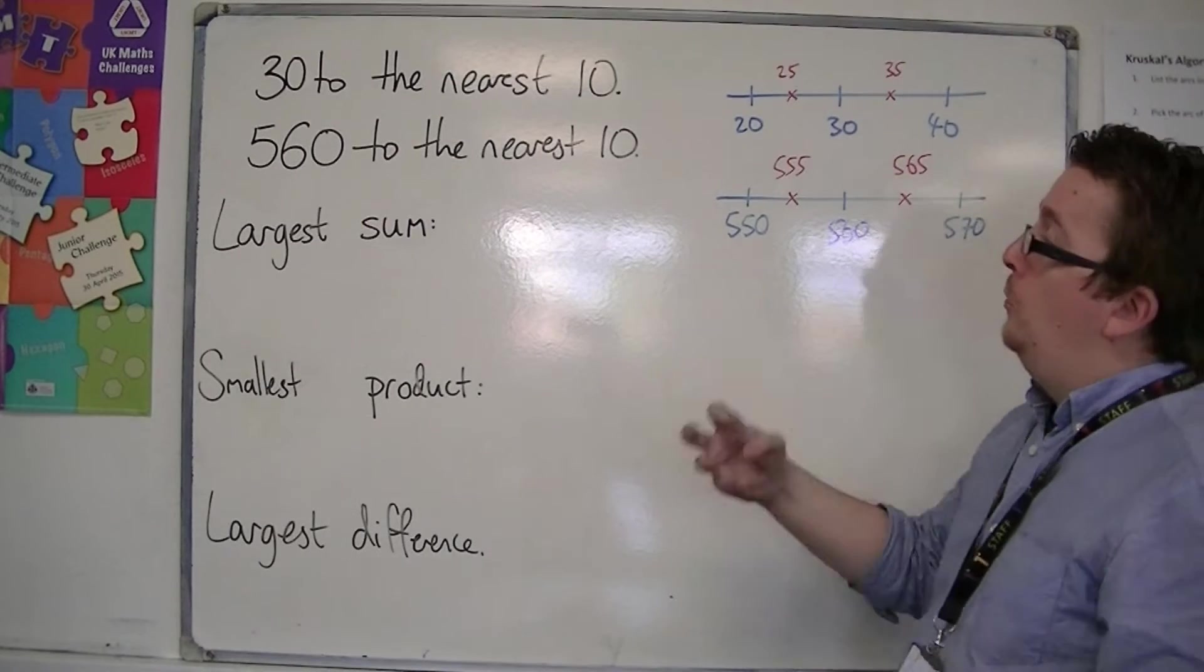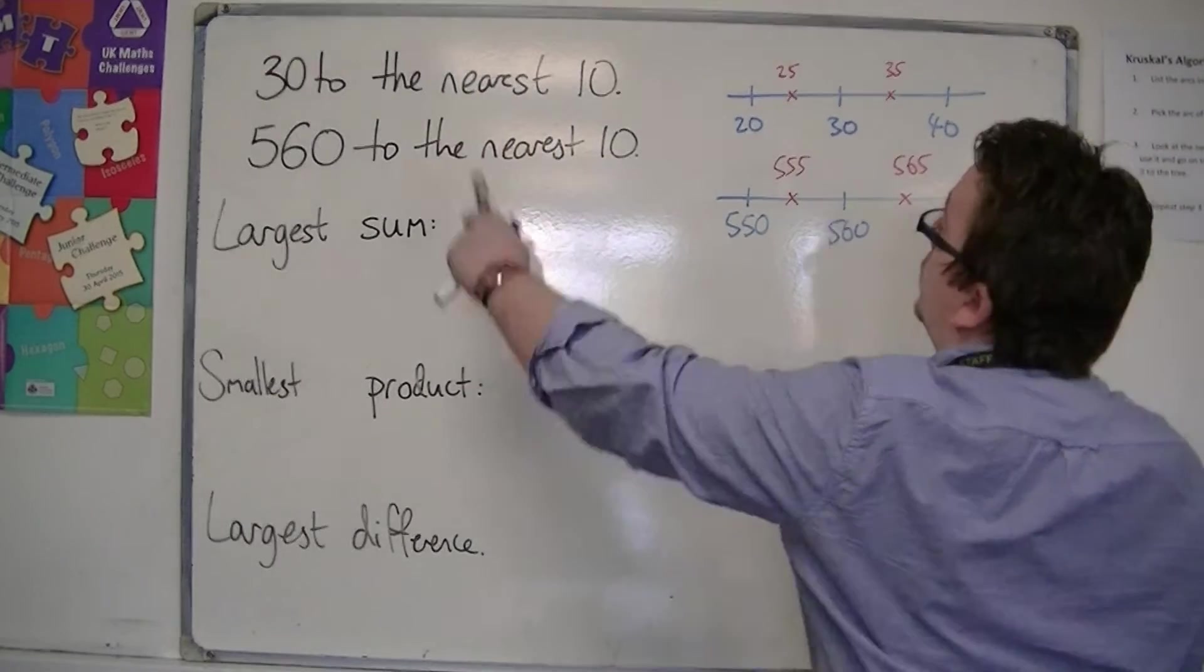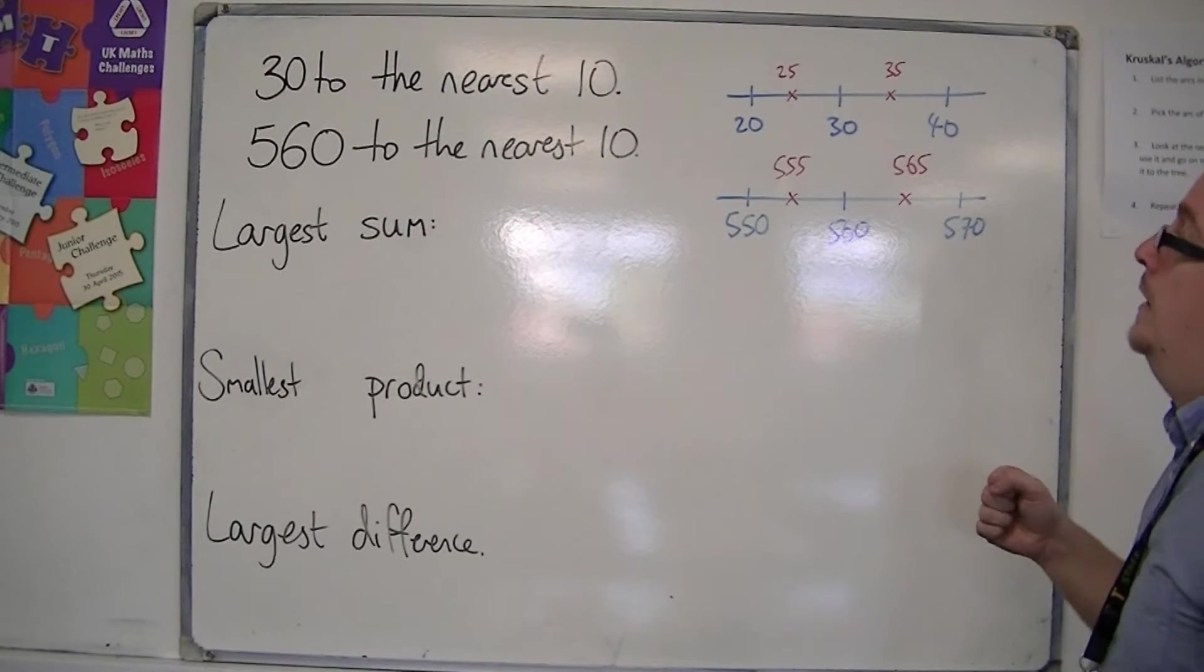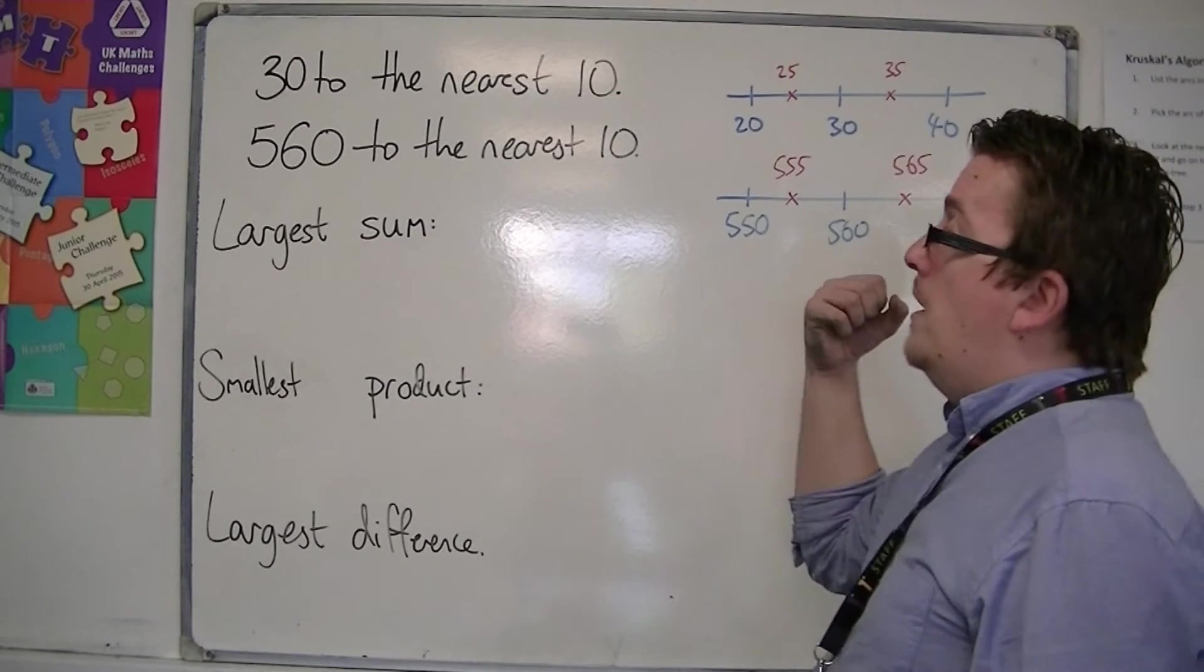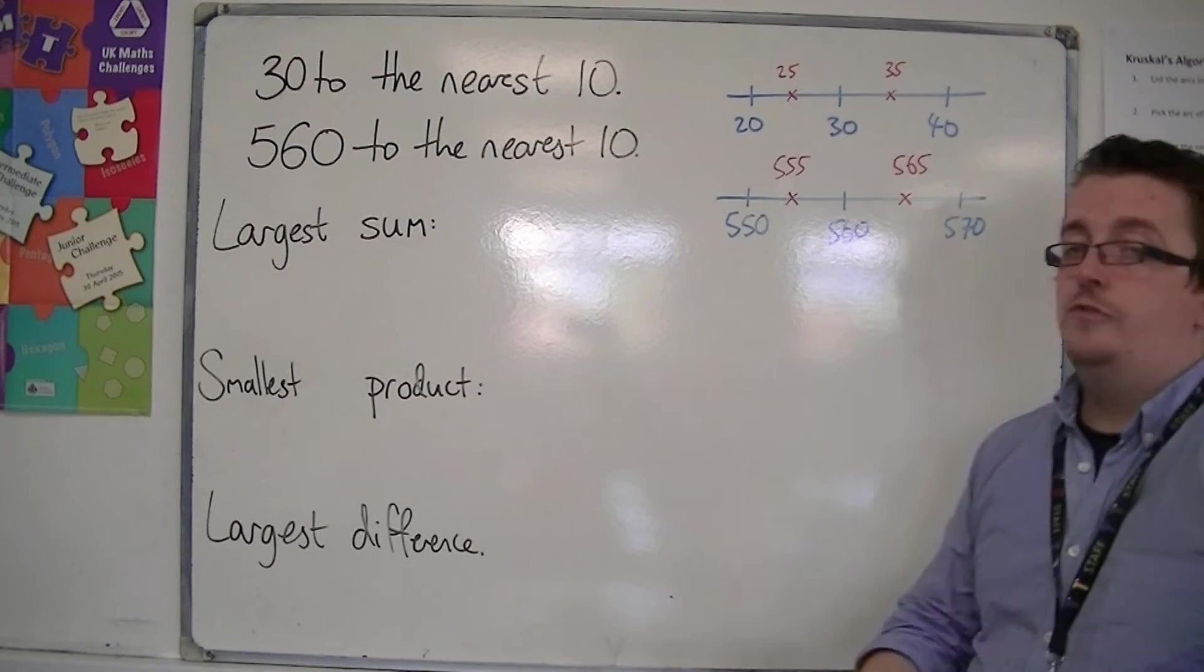So the smallest my first number could have been is 25, and the largest my second number could have been would be 565.